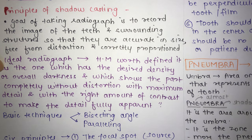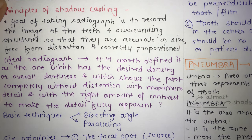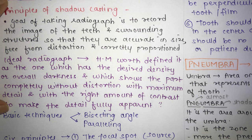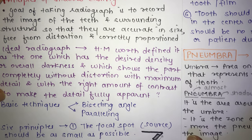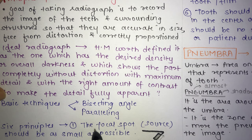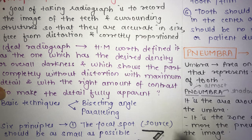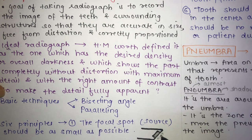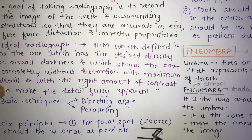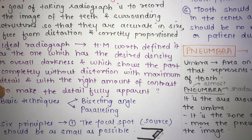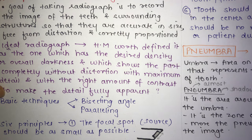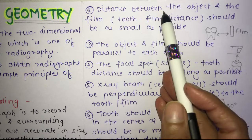The objective of both techniques is to direct the central ray at the most favorable angle through the patient's tissue and onto the film so that the least distortion and most accurate representation is obtained. This is achieved by following six rules of image formation. The first principle is that the focal spot — the source of x-rays in the anode — should be as small as possible.